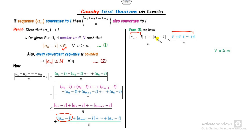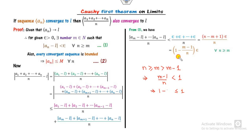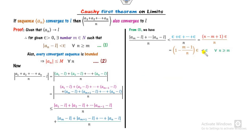How many epsilon terms are there? They run from index m to n, so there are (n − m + 1) terms for all n greater than m. After separating them, since n is greater than m and m is always greater than (n − m), we get (m − 1)/n is less than 1. Therefore (1 − (m−1)/n) is less than 1, so this part is less than epsilon.